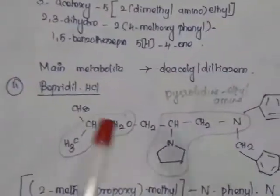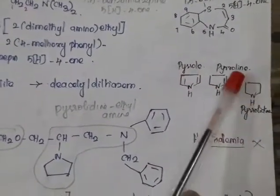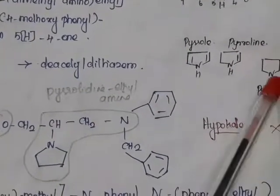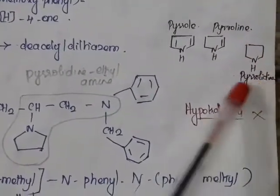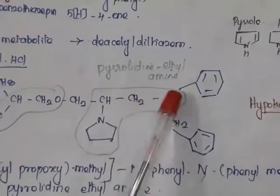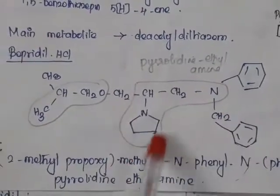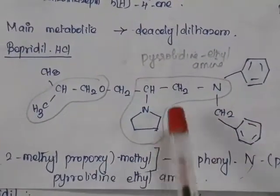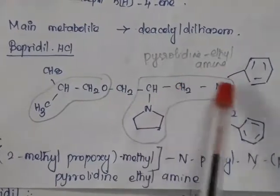The next drug is bepridyl, which is also a calcium channel blocker. Looking at the structure of bepridyl: a 5-membered ring having one nitrogen is called pyrrolidine. If one bond is left, it is called pyrrolidene. Here this is pyrrolidine. With the pyrrolidine, an ethylamino group is attached, and that is considered as the parent — pyrrolidine-ethylamine.